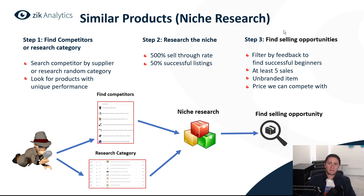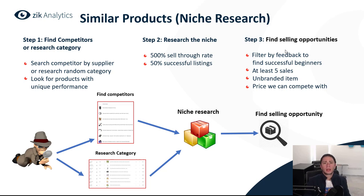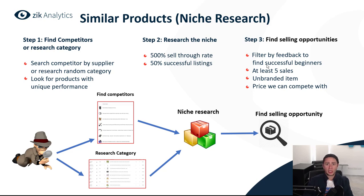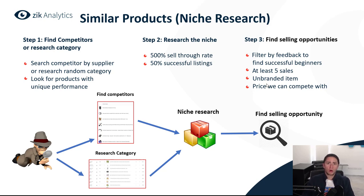Once you find a good niche, go to step number three: finding selling opportunities. Look for a specific product that fits the similar products method. Go inside the product research result, filter by feedback to find successful beginners — sellers with low feedback who managed to rank on page one and generate sales. Look for products with at least five sales in the last 30 days that are unbranded. For example, don't do the similar products method on Nike shoes because the brand is why people buy them — prefer niches where the brand is less important. Make sure you can compete with the price.